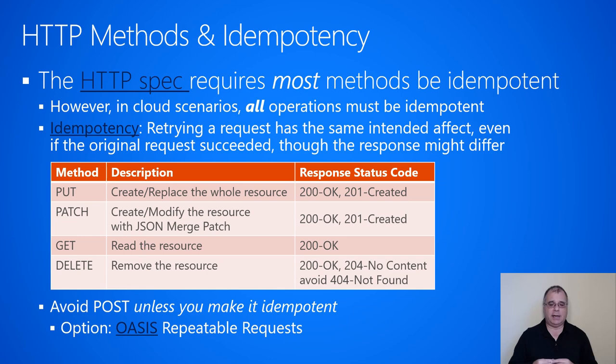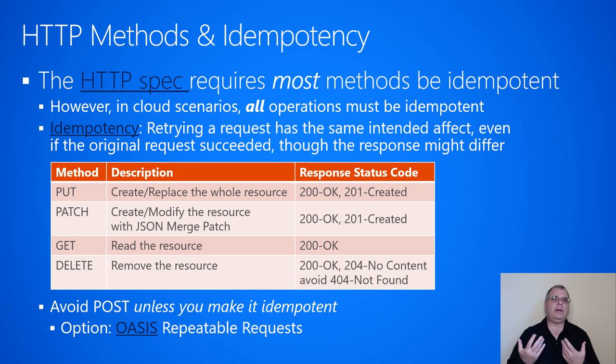So what is the definition of idempotency? It means that retrying a request has the same intended effect, even if the original request already succeeded, although the response might differ. The HTTP methods we recommend that services use are PUT, PATCH, GET, and DELETE. The HTTP specification says all of these methods have to be idempotent.